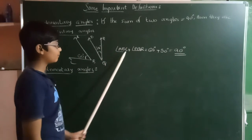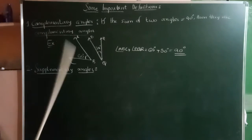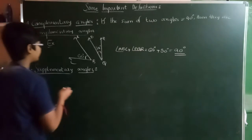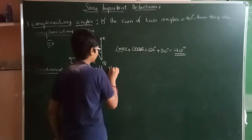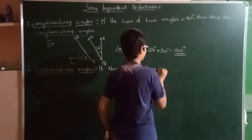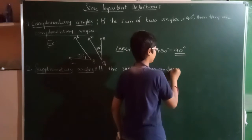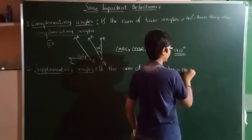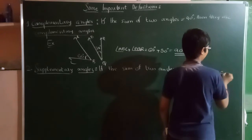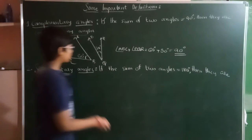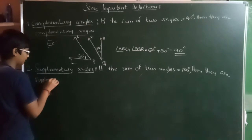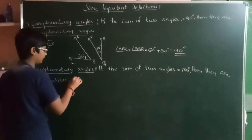So, angle ABC and angle PQR are called complementary angles. Now, supplementary angles. If the sum of two angles is equal to 180 degrees, then they are supplementary angles.